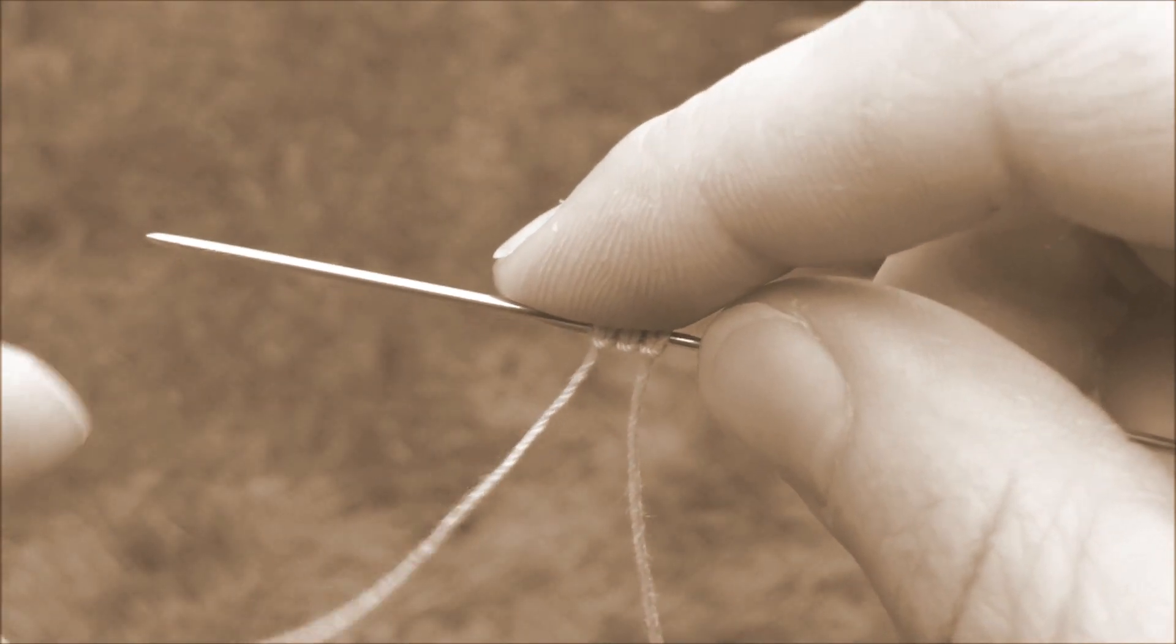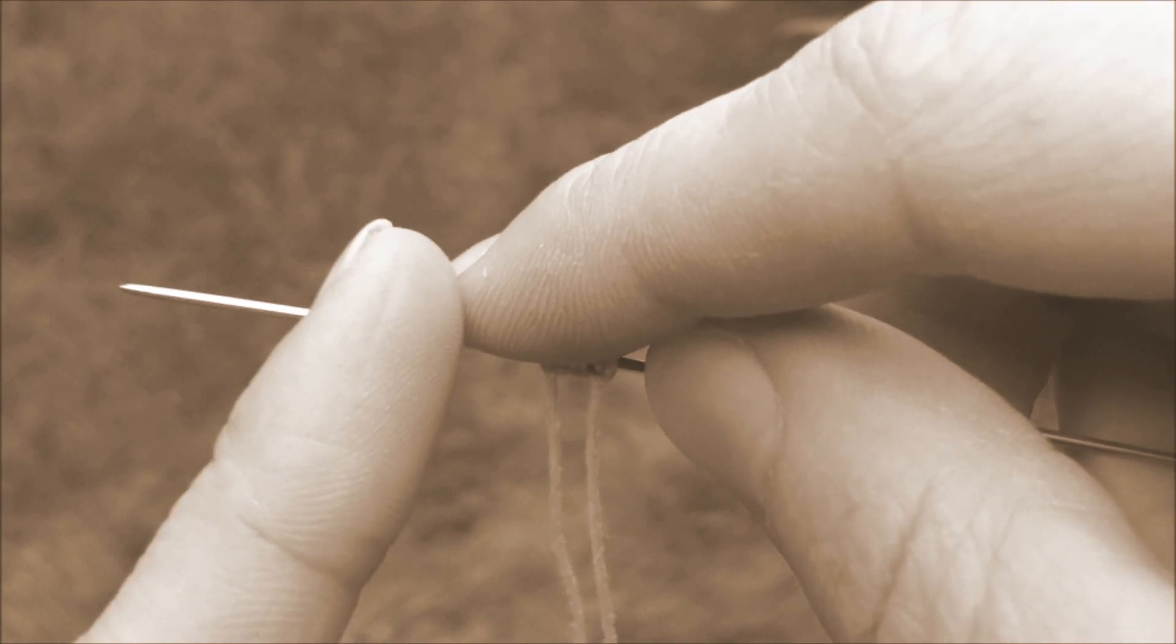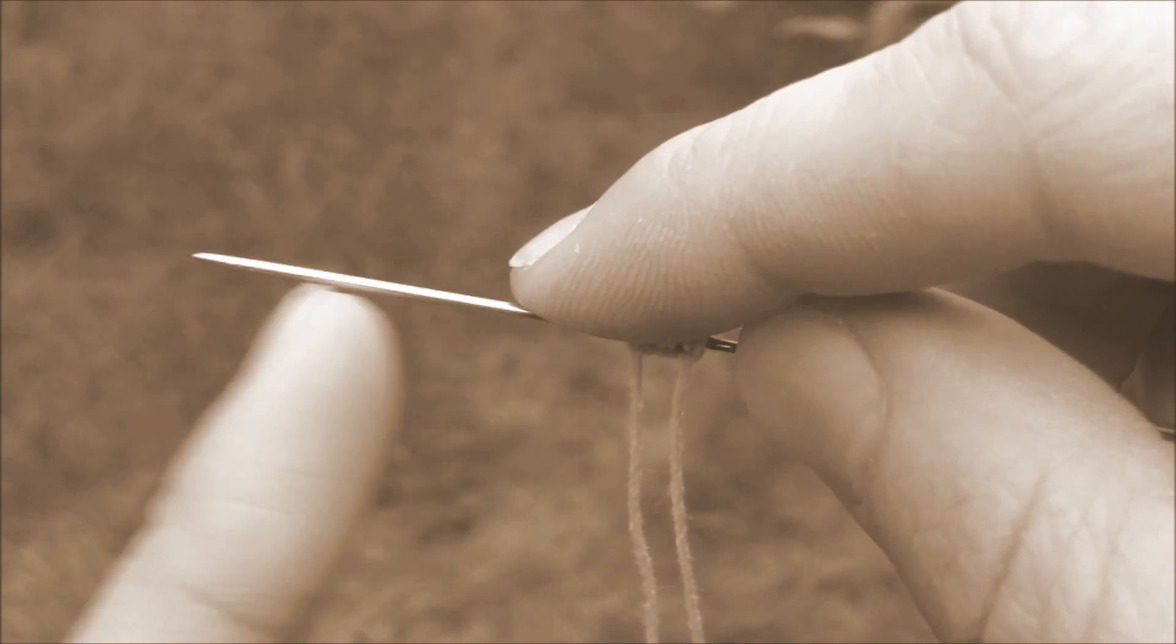Now how you make your picot is actually just by using your finger or an object as a spacer when you make your next double stitch.